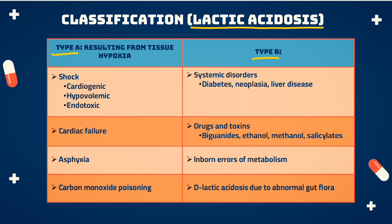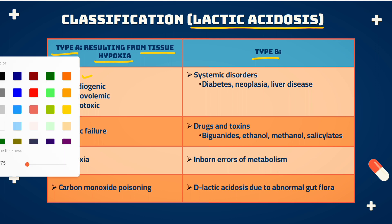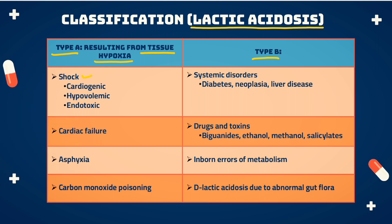Type A results from tissue hypoxia-like conditions. These conditions include: first, shock — which can be cardiogenic shock, hypovolemic shock, or endotoxic shock due to any toxin. Apart from that, lactic acidosis can also develop from cardiac failure, asphyxia, or carbon monoxide poisoning. So Type A is due to tissue hypoxia.